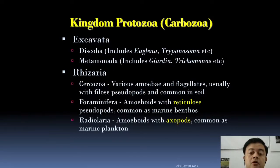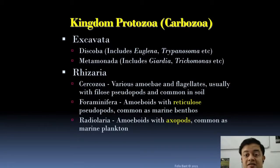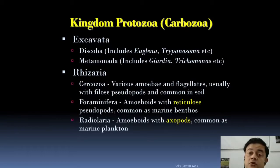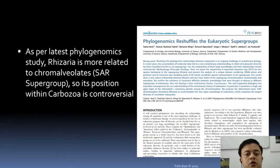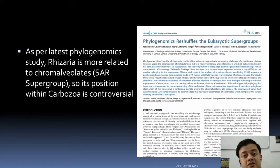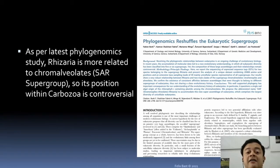Radiolarians are amoeboids with axopods — star-shaped pseudopods — and are common in the ocean. Unlike forams which are benthos (bottom dwellers), radiolarians are plankton floating at the sea surface. As per the latest phylogenomic study, Rhizaria is more related to Chromalveolata, giving rise to the SAR supergroup — Straminopiles, Alveolates, and Rhizarians. So Rhizaria's position within Carbozoa is highly controversial and not supported by phylogenetic systematics.